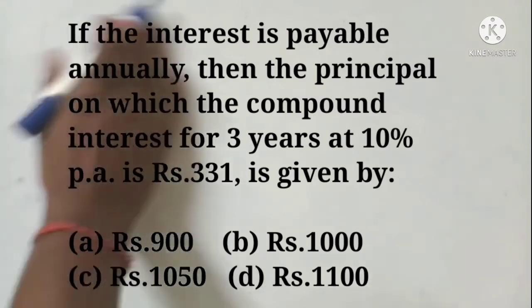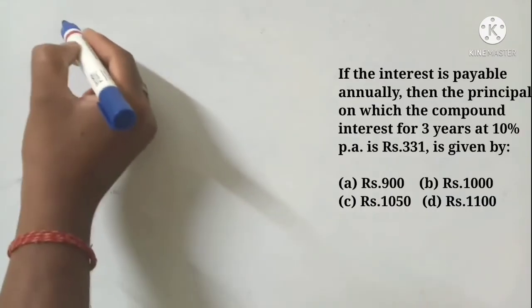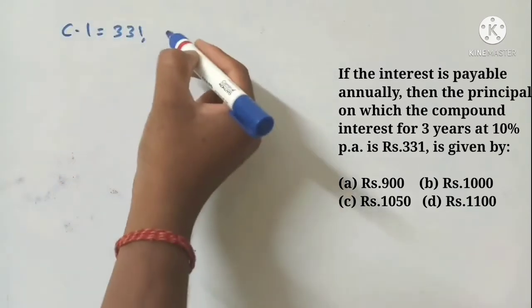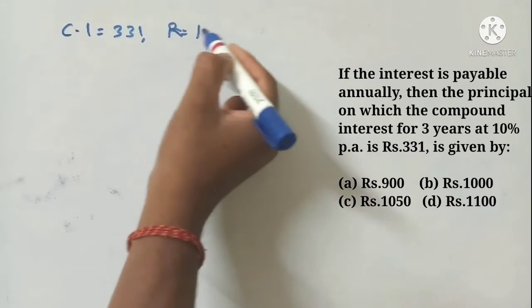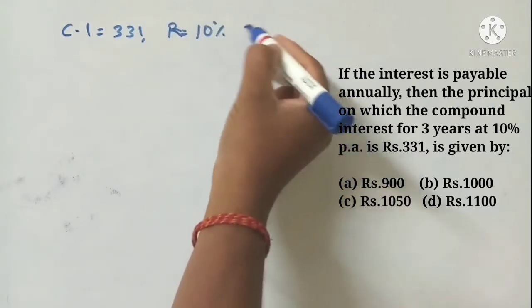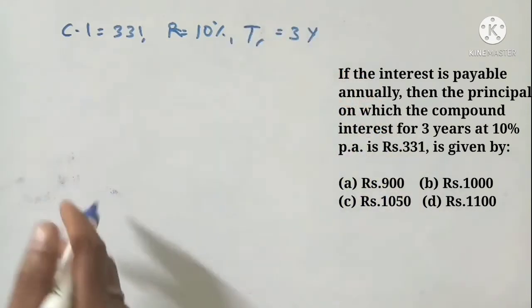Okay, so the compound interest for 3 years is Rs.331, the rate of interest is 10%, and the compound interest is Rs.331.